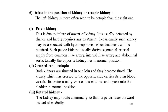The sixth defect is a defect in position of the kidney and ectopic kidney. The left kidney is more often ectopic than the right — this is the pelvic kidney. It is due to failure of ascent of the kidney, usually detected by chance and rarely requires treatment. Occasionally such a kidney may be associated with hydronephrosis. Pelvic kidneys usually derive segmental arterial supply from the common iliac, internal iliac artery, and abdominal aorta.